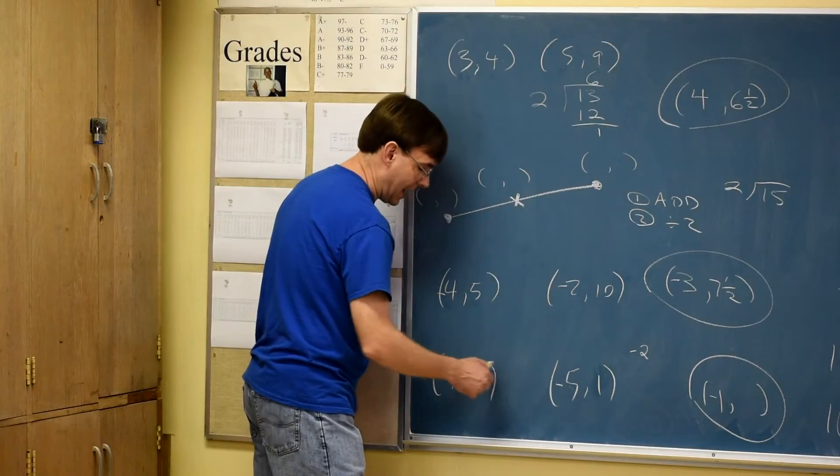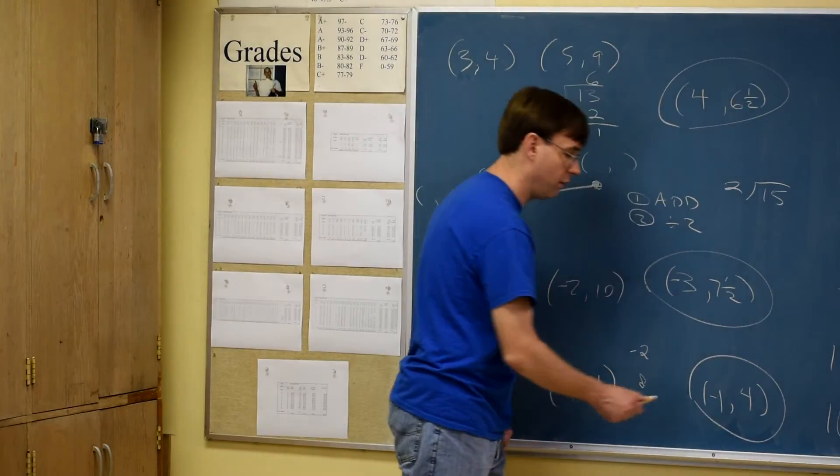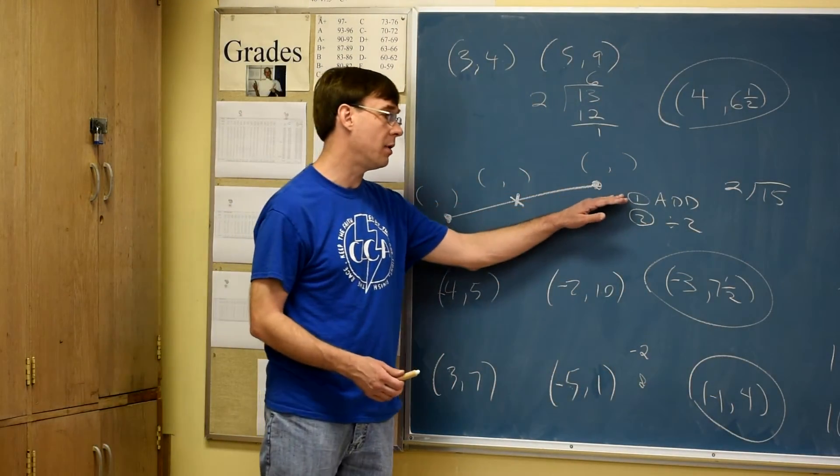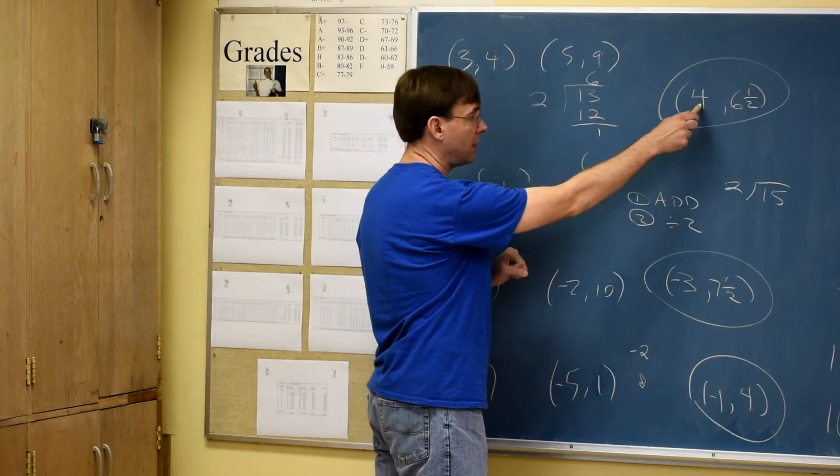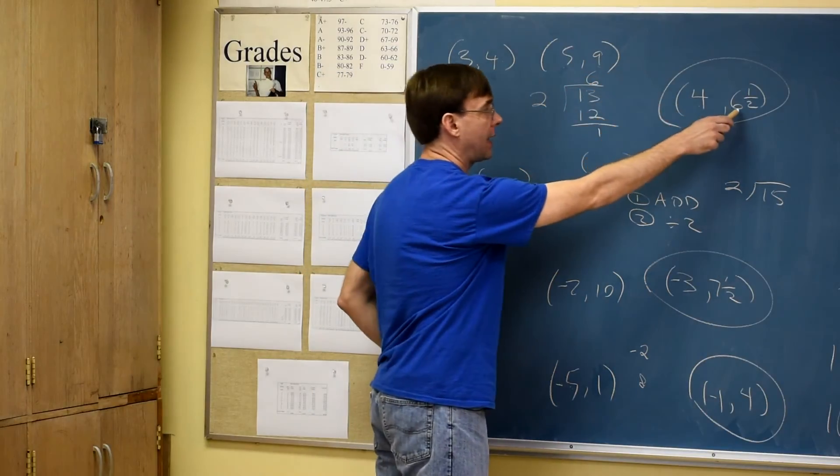7 and 1, add 7 and 1 is 8. 8 divided by 2 would be 4. They're all just following those steps. Add the numbers. Make sure you add the first numbers to create the first number. Make sure you add the second numbers, the y's, to create the second number.